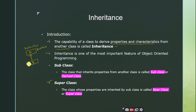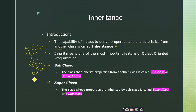The superclass is otherwise called the base class. The other class — class B — where we are inheriting the properties from the superclass, is called the subclass or derived class. These terms are used interchangeably: derived class and subclass mean the same thing, and superclass and base class mean the same thing.